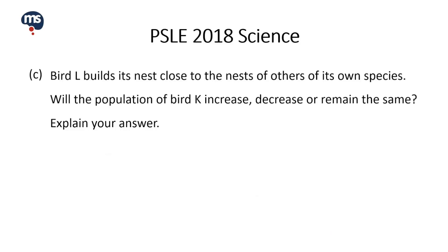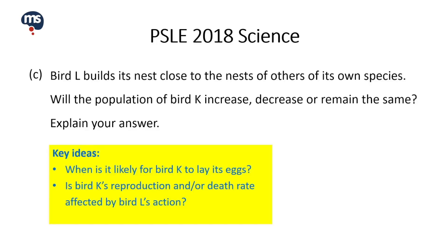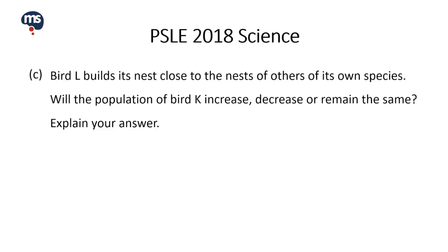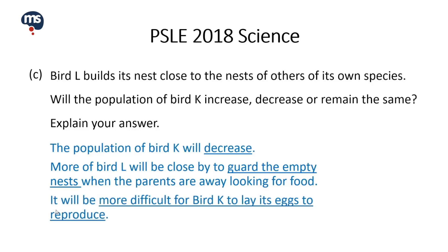Let us now look at Part C. Bird L builds its nest close to the nests of others of its own species. Will the population of bird K increase, decrease or remain the same? The two key ideas are: when is it likely for bird K to lay its eggs, and is bird K's reproduction and/or death rate affected by bird L's action? The population of bird K will decrease. More of bird L will be close by to guard their nests when the parents are away looking for food, making it more difficult for bird K to lay its eggs. This leads to a lower reproduction rate and a decrease in population.